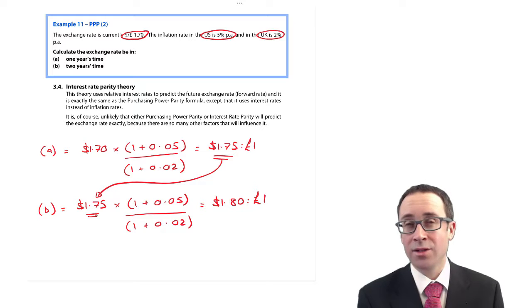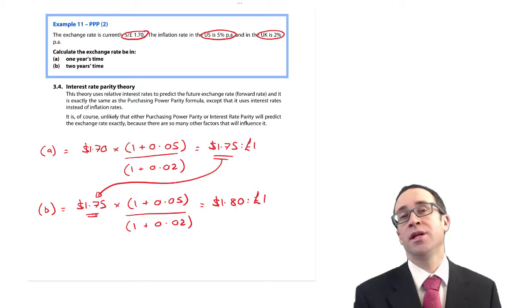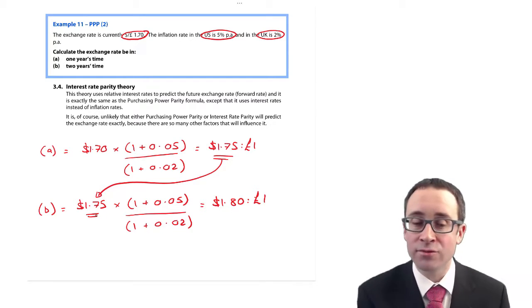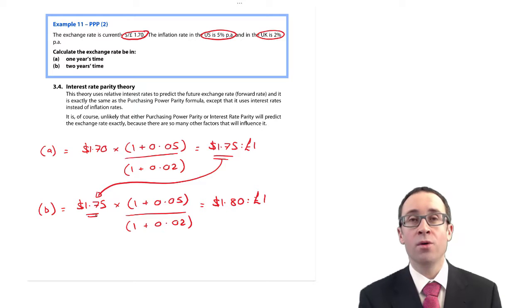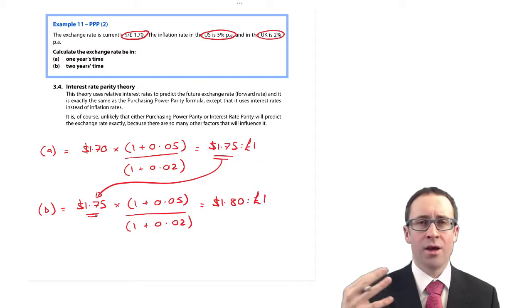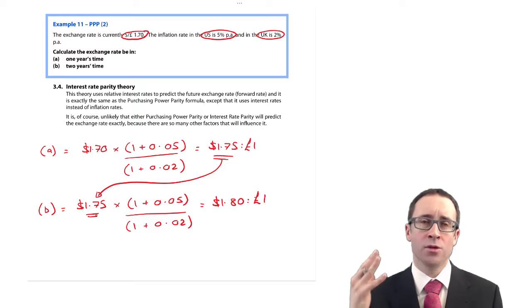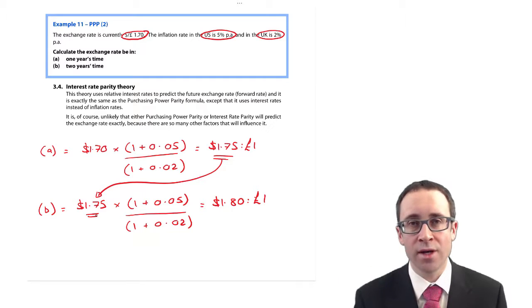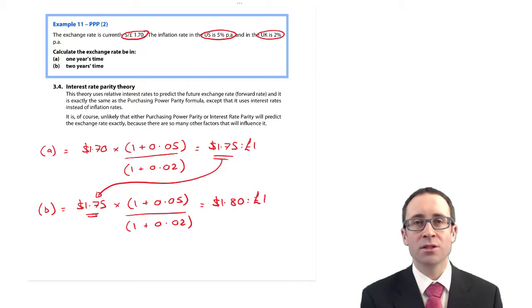The only other variation in the exam is interest rate parity theory, which is exactly the same theoretically as purchasing power parity. Instead of looking at the differential in inflation rates, you look at the differential in interest rates. For every example we've done, just change the word 'inflation' to 'interest' and it works the same way — take the current rate and multiply by 1 plus the overseas interest rate, divided by 1 plus the base currency interest rate.